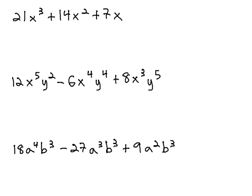Normally, when we're factoring out a greatest common factor on an expression like 21x³ + 14x² + 7x, we will look to see what we can divide each term by.